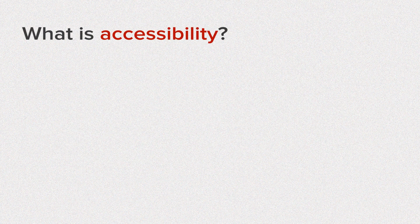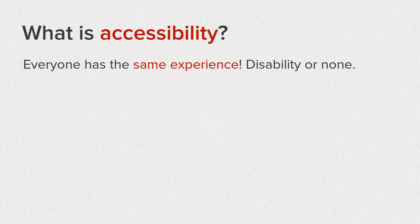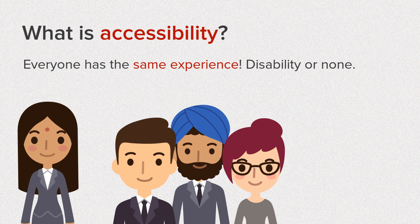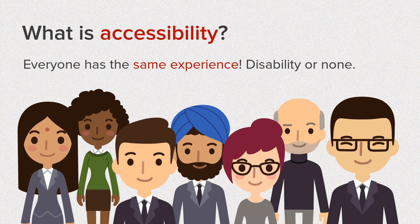So what is accessibility? Accessibility simply means making sure everyone has the same experience on your website — whether they have a disability, impairment, or not. Any one person should not be prevented from accessing your content.